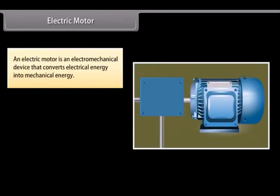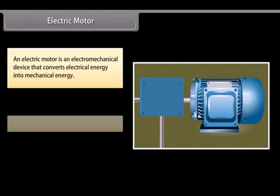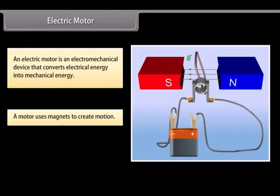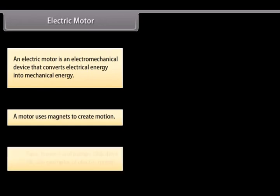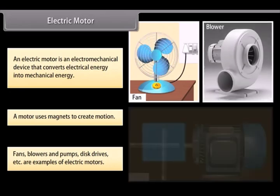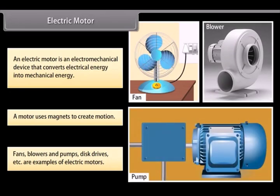Electric motor. An electric motor is an electromechanical device. It converts electrical energy into mechanical energy. Let us look at how electric motors work. A motor uses magnets to create motion. Inside an electric motor, the attracting and repelling forces of a magnet create rotational motion. Fans, blowers, pumps, disc drives, etc. are some examples of electric motors.